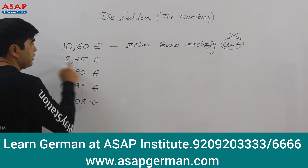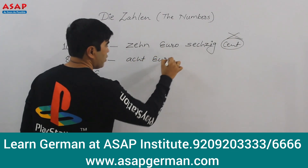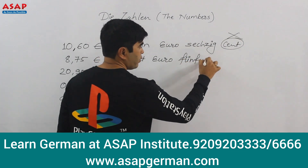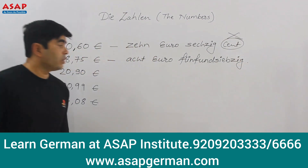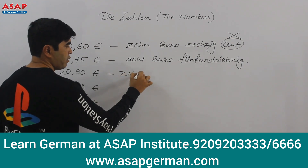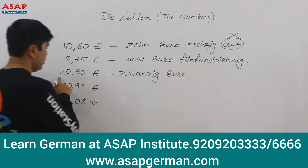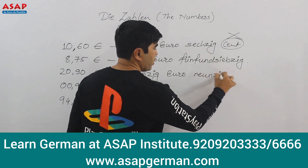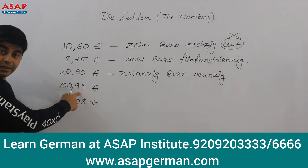When there are euros, the word 'Cent' is not used. This one here: 8 Euro 70 — you say acht Euro siebzig. Next, 20 Euro 90 — you say zwanzig Euro neunzig.